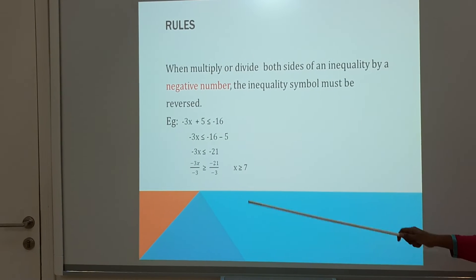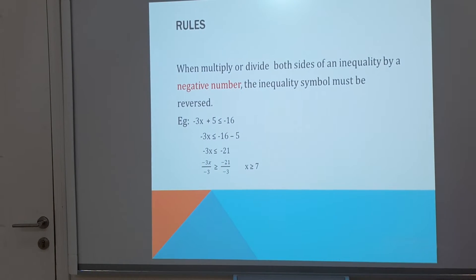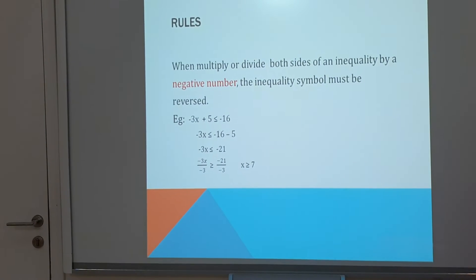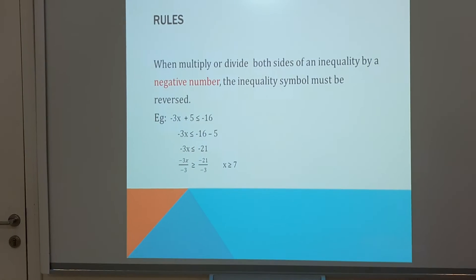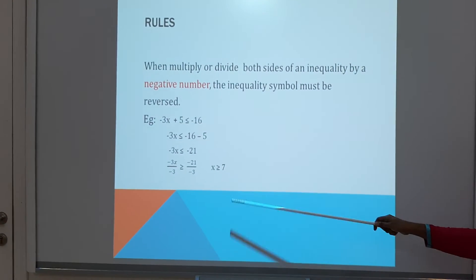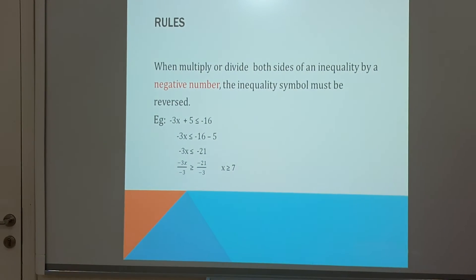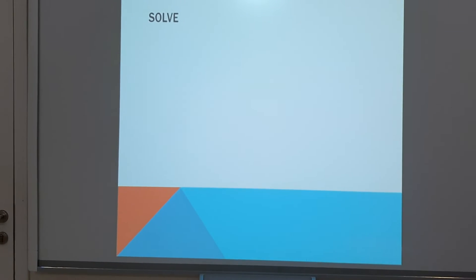So negative 3x divided by negative 3 eliminates the 3. And negative 21 divided by negative 3 is 7. So our answer is x is greater than or equal to 7.